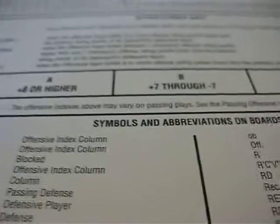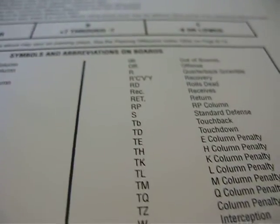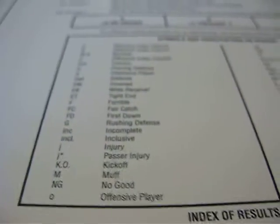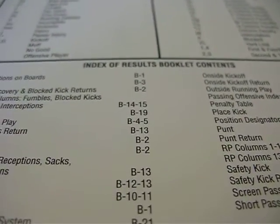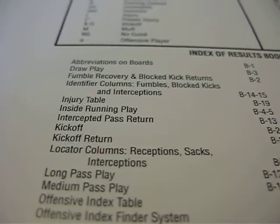You also have the symbols and abbreviations for the boards and the booklets all through here. And then of course you have the table of contents that lists all the items that are in the Master Game Edition book.